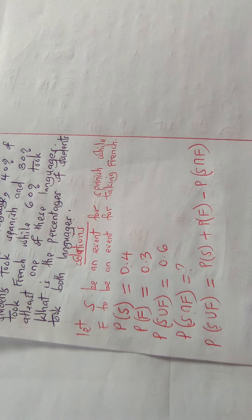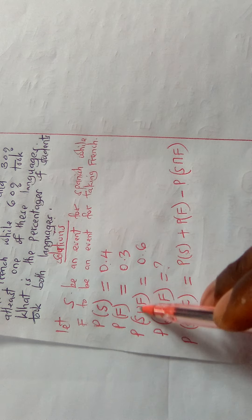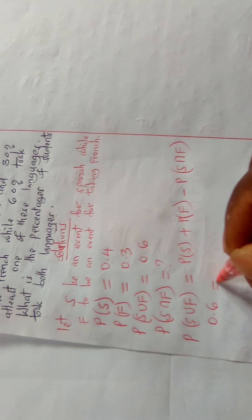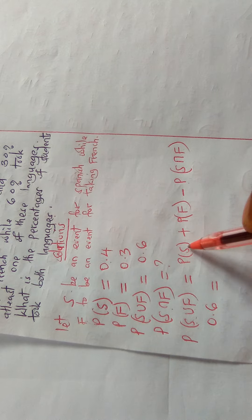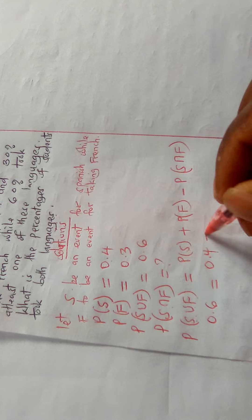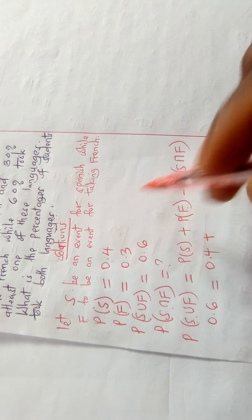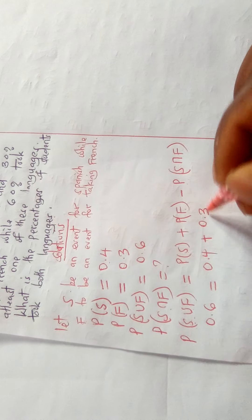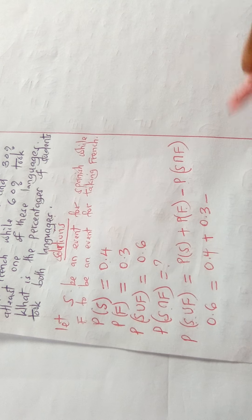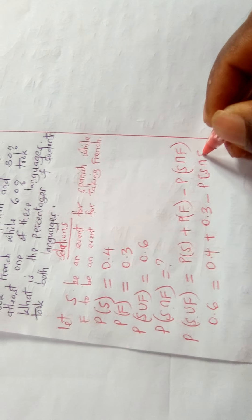Substituting into the formula: P(S ∪ F) = 0.6, P(S) = 0.4, P(F) = 0.3. So we write: 0.6 = 0.4 + 0.3 − P(S ∩ F), where P(S ∩ F) is the unknown we are required to find.